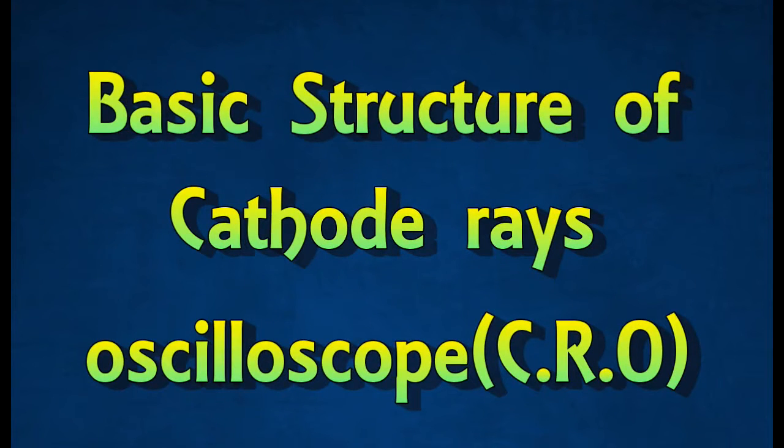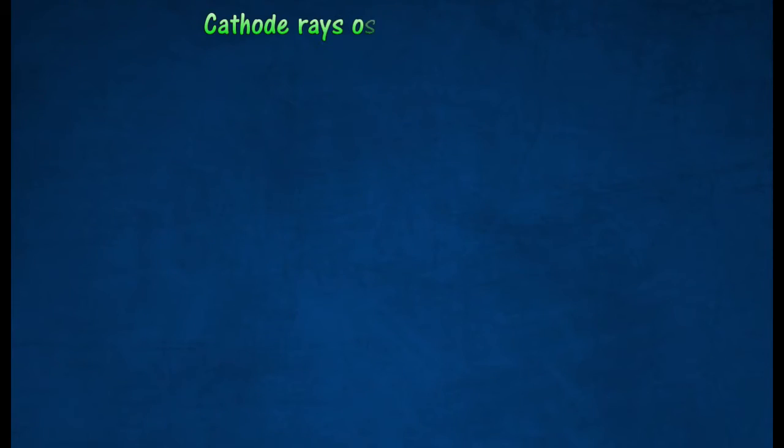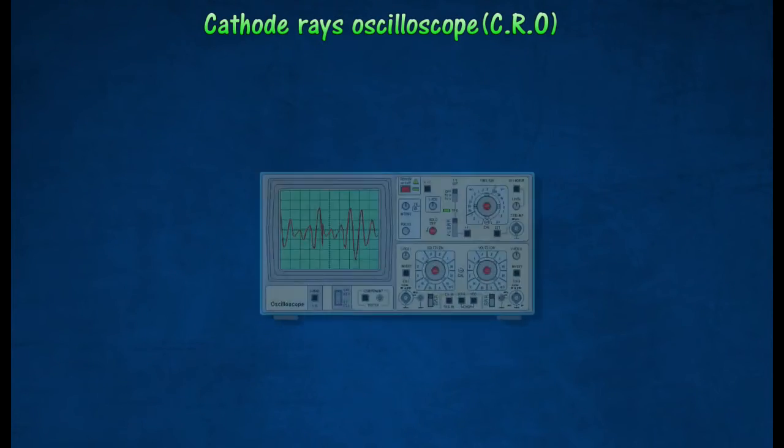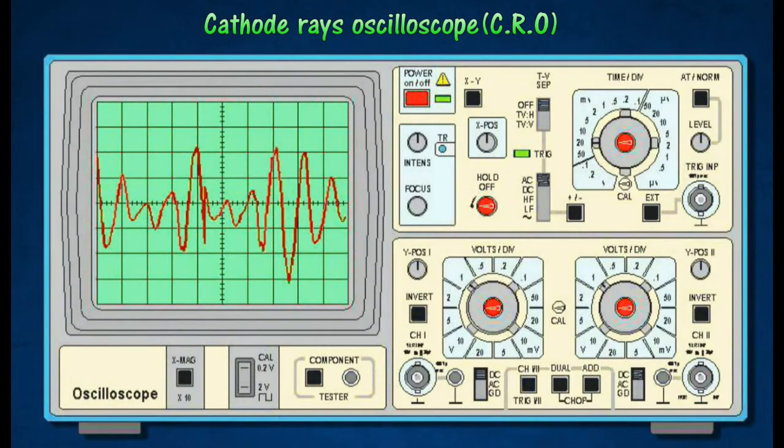Basic Structure of Cathode-Rays Oscilloscope. A cathode-ray oscilloscope is an instrument used to study various waveforms and measure voltages of electronic devices. Oscilloscopes are used to observe the change of an electrical signal over time, such that voltage and time describe a shape which is continuously graphed against a calibrated scale.